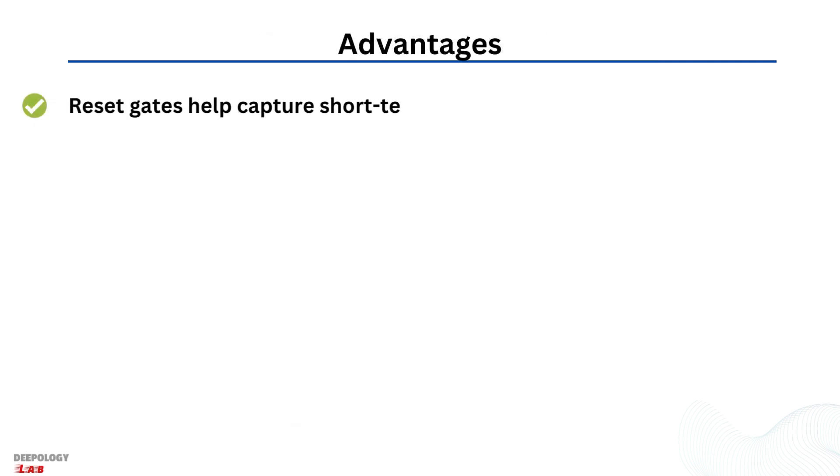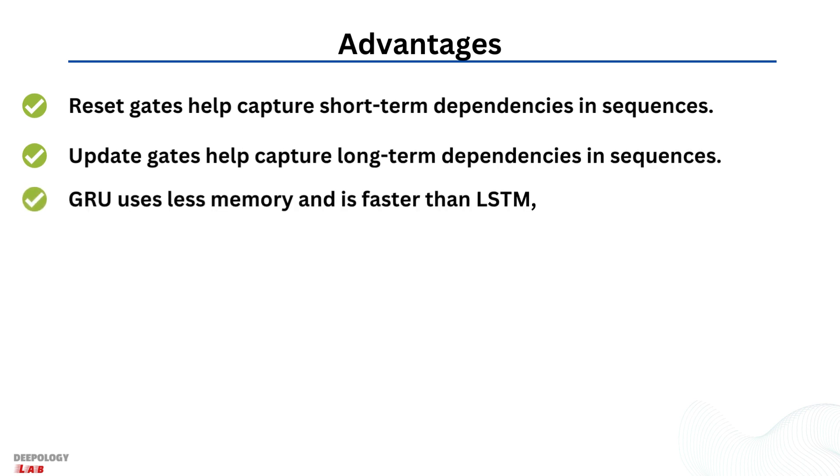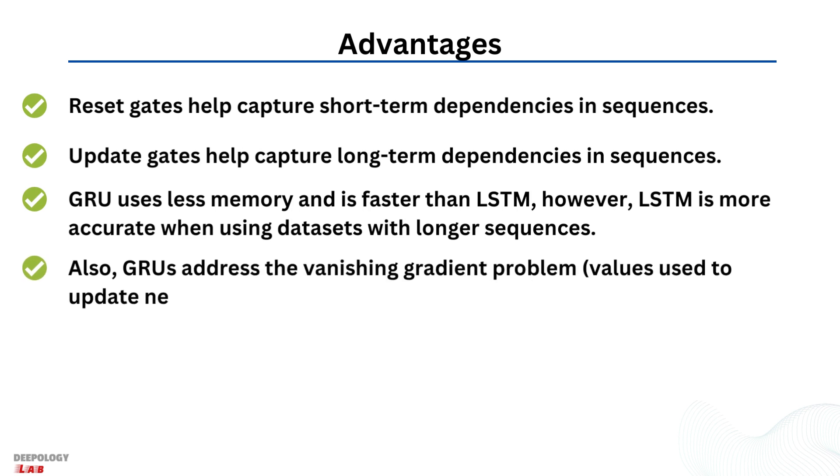In summary, reset gates help capture short-term dependencies in sequences. Update gates help capture long-term dependencies in sequences. GRU uses less memory and is faster than LSTM. However, LSTM is more accurate when using datasets with longer sequences. Also, GRUs address the vanishing gradient problem from which vanilla recurrent neural networks suffer.